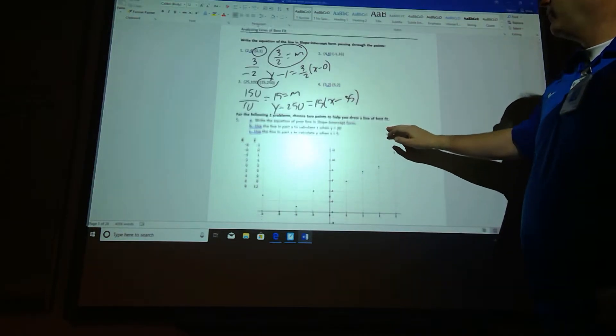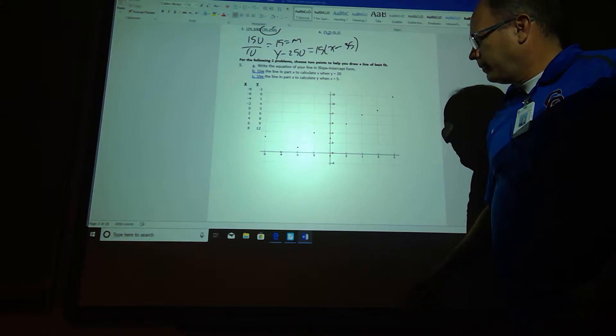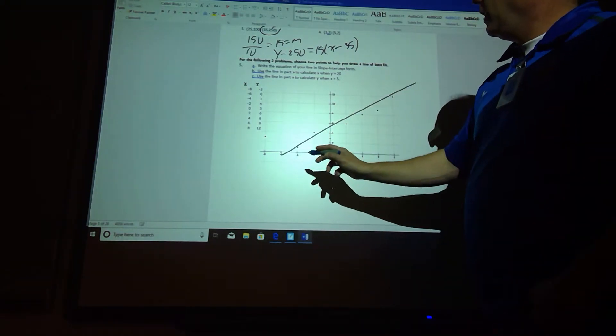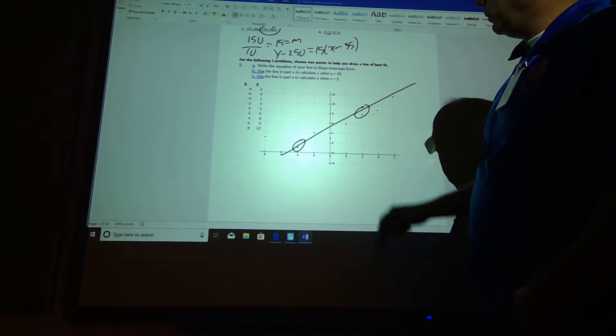Let's see what else we got. Number 5: choose two points for a line of best fit. I have my line of best fit, and we're going to pick two values that look good. So, I'd say this one and probably this one would look good for us.